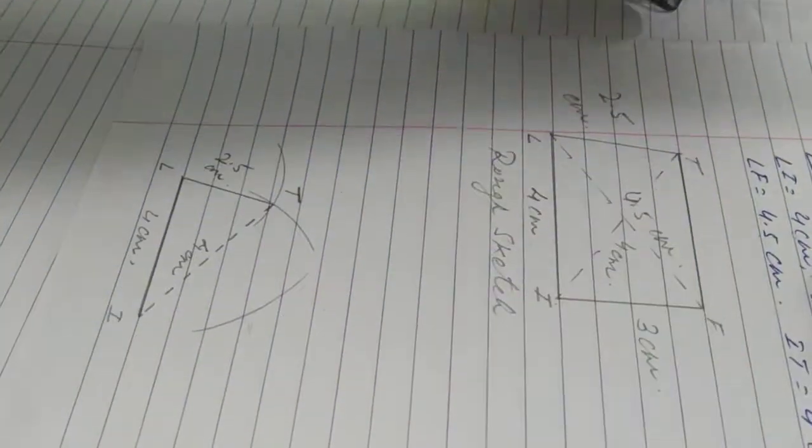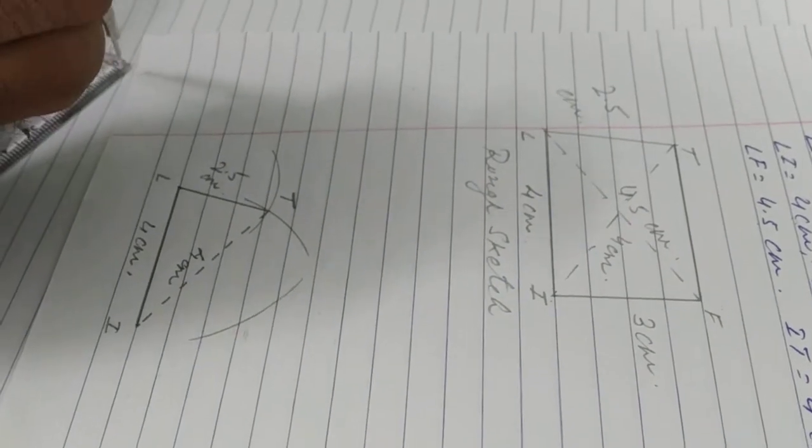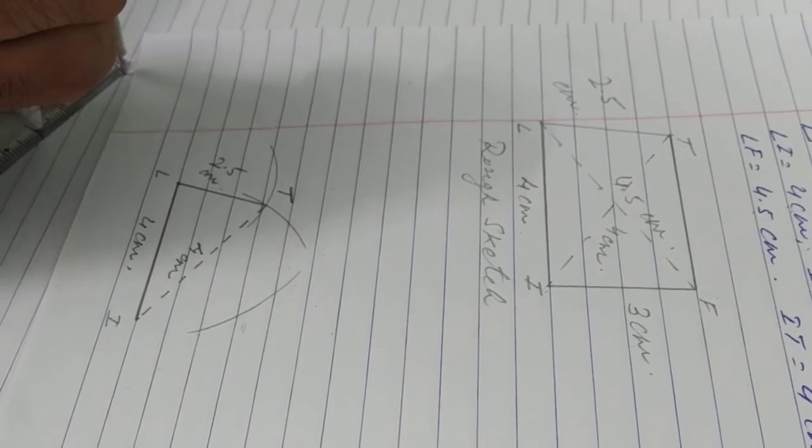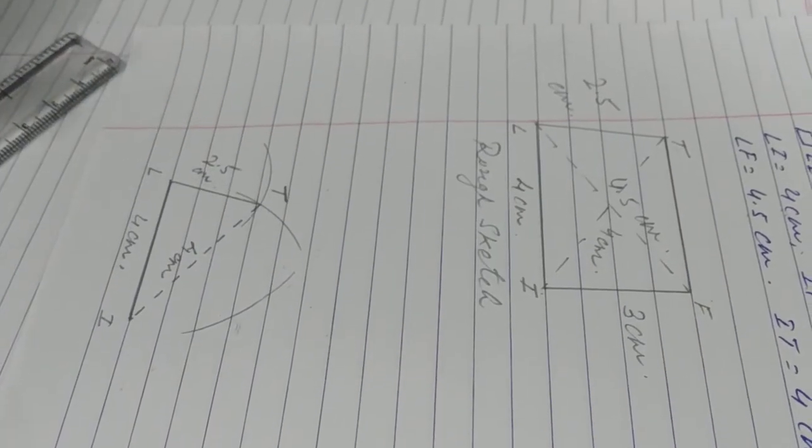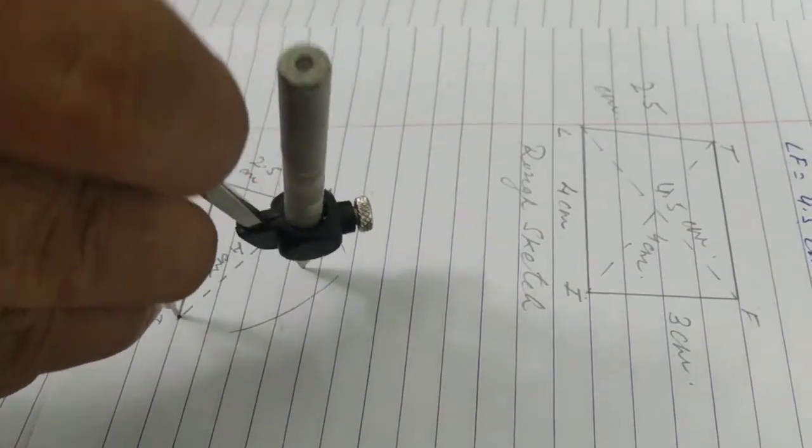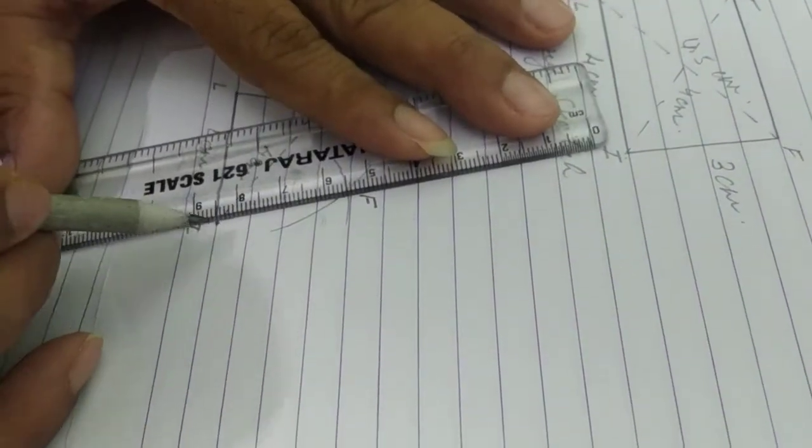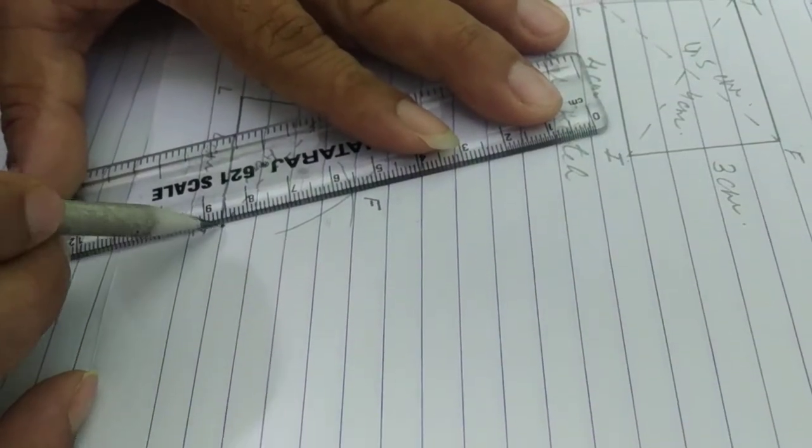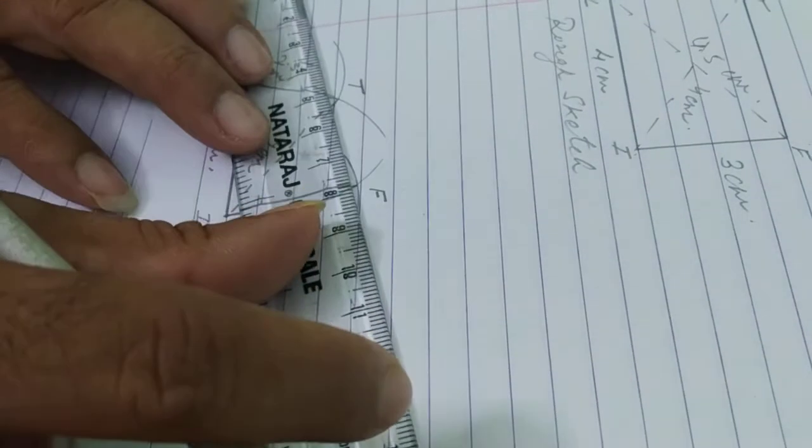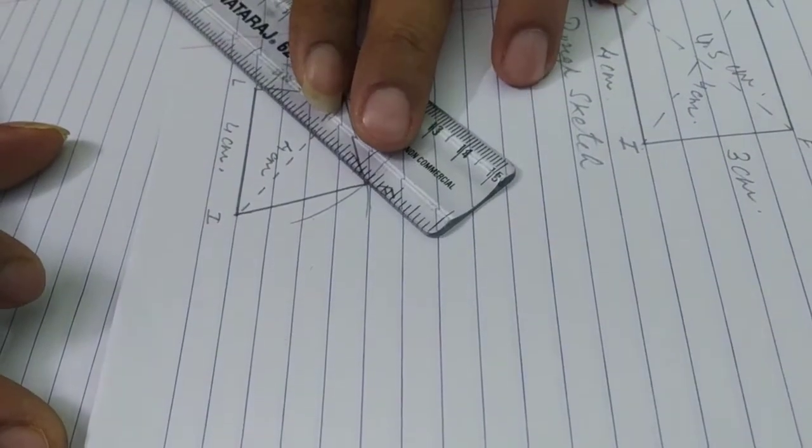Then after, from point I, 3 centimeters. Whenever it's intersect, which point it is? And it's another diagonal.